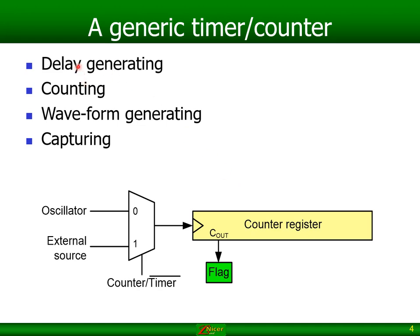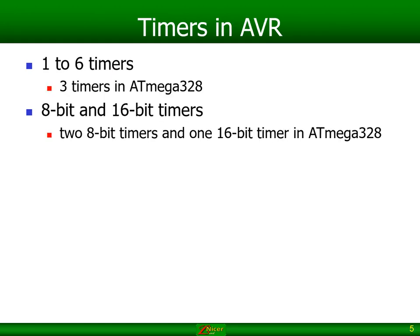Basically we've got the counting function and the delay generation function. Now depending on the AVR you are using, it has actually up to six timers. Specifically the 328P has got three timers: Timer 0, Timer 1, and Timer 2. Depending on which timer it is, it could be an 8-bit timer or a 16-bit timer. Timer 0 and Timer 2 will be your 8-bit timers, and Timer 1 is the 16-bit timer in this specific device.